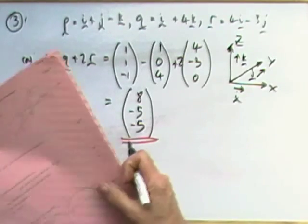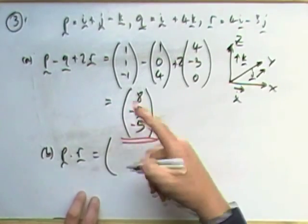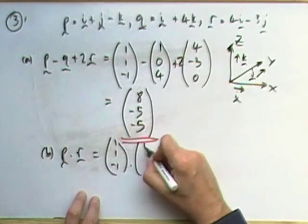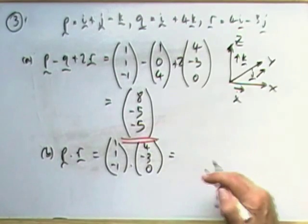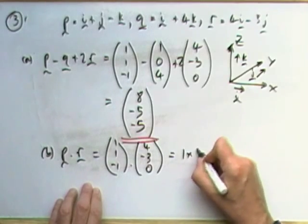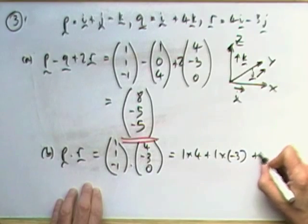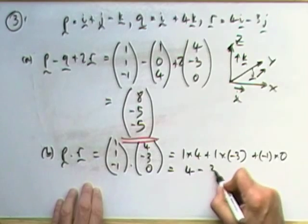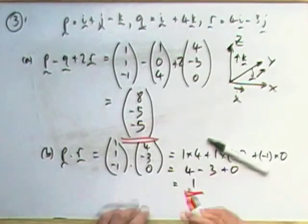Part B: P dot R. P was (1, 1, -1), R was (4, -3, 0). The scalar product means multiplying the corresponding components together, adding them up. 1 times 4 plus 1 times negative 3 plus negative 1 times 0. Well, times 0 won't give any answer. So that gives me 4 minus 3 plus 0, which gives me 1. The scalar product is 1.